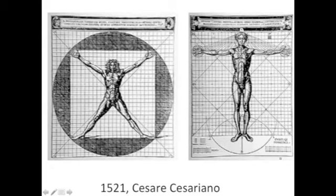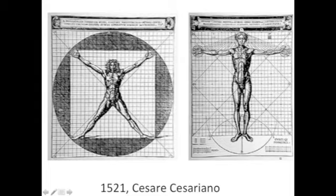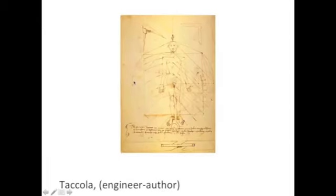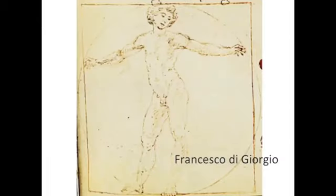How do you put them together? Fra Gioconda couldn't. Cesareano is trying every trick in the book, trying to get Vitruvius's literary description to come together in a drawing. His guy looks like he's stretched on the rack — size 16 feet, baseball glove hands. There's a very excited young man in the center of the circle. Francesco Di Giorgio probably has the sweetest of all the different Vitruvian man ideas, where his guy is just kind of relaxing, chilling in the space.